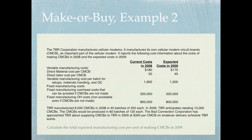TBR manufactured 8,000 CMCBs in 2008 in 40 batches of 200 each. In 2009, TBR anticipates needing 10,000 CMCBs, produced in 80 batches of 125 each. The Bad Connection Corporation has approached TBR about supplying CMCBs at $300 per CMCB on whatever delivery schedule TBR wants. Calculate the total expected manufacturing cost per unit of making CMCBs in 2009.